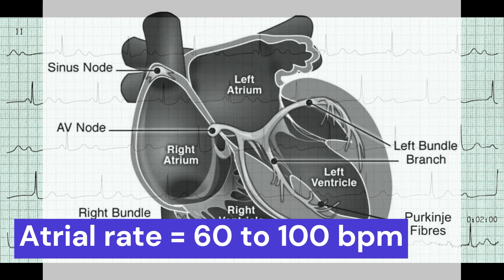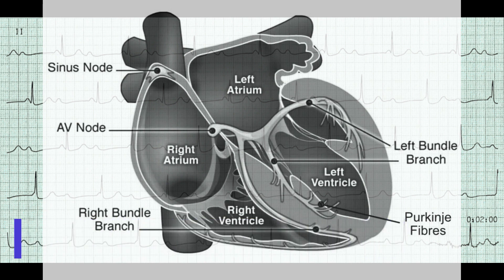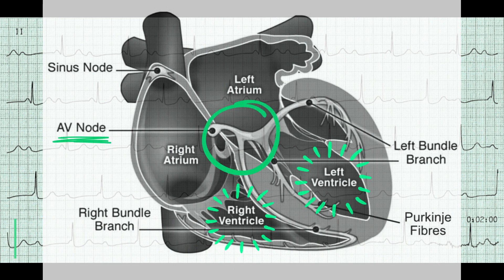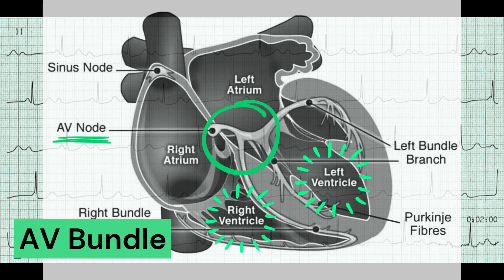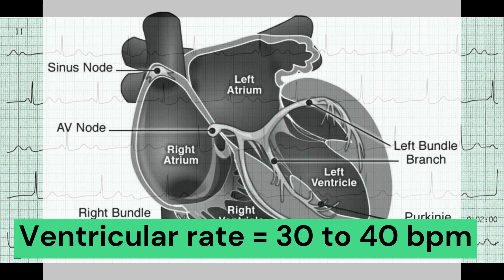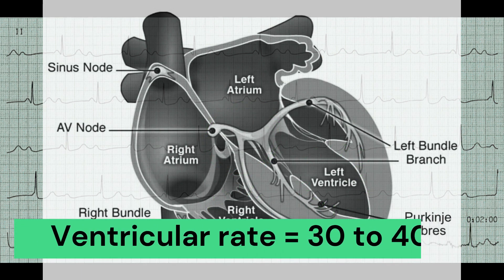The ventricles, on the other hand, are paced by a secondary pacemaker located in the bundle of His or the ventricular conduction system, which generates impulses at a slower rate of around 30 to 40 beats per minute.